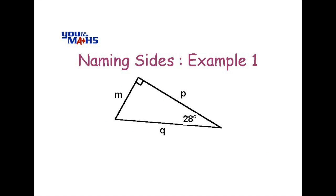At this point it's recommended that you pause the DVD and see if you can guess the names for each of the sides. Remember, M, P, or Q will be named opposite, adjacent, or hypotenuse.